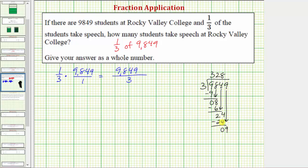Bring down the last digit, and there are three threes in nine. Three times three equals nine. Subtract. We have a remainder of zero. Now we know this improper fraction simplifies to 3,283.